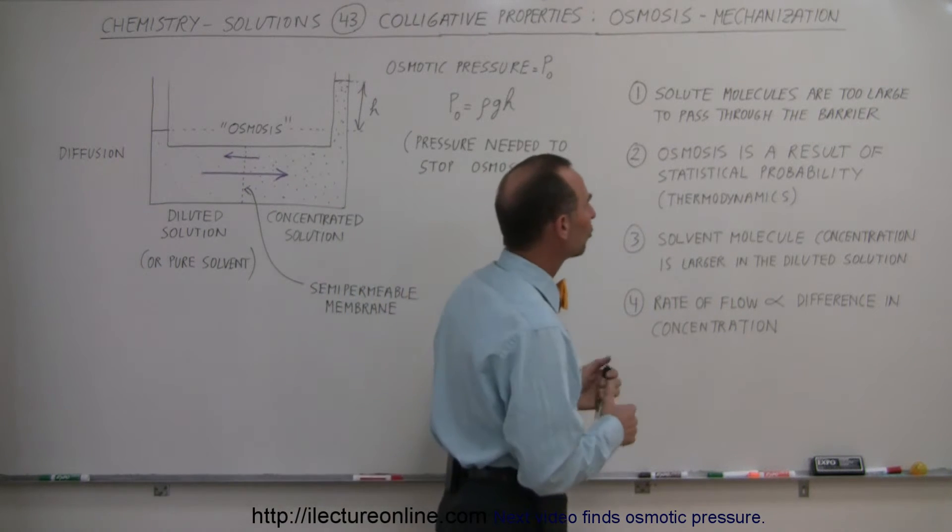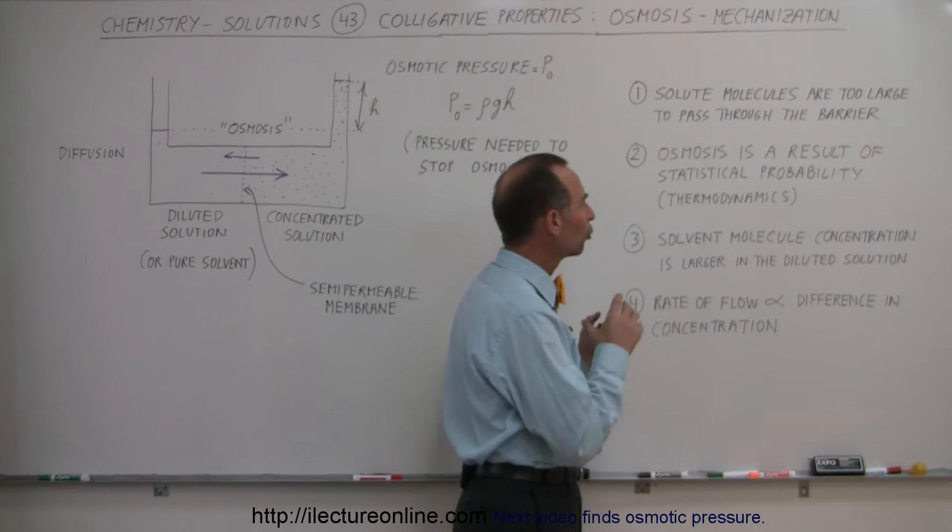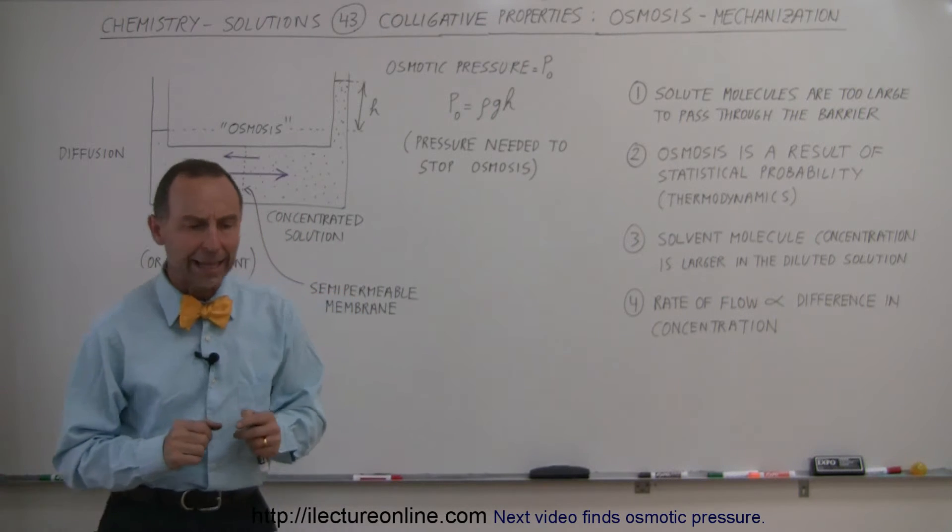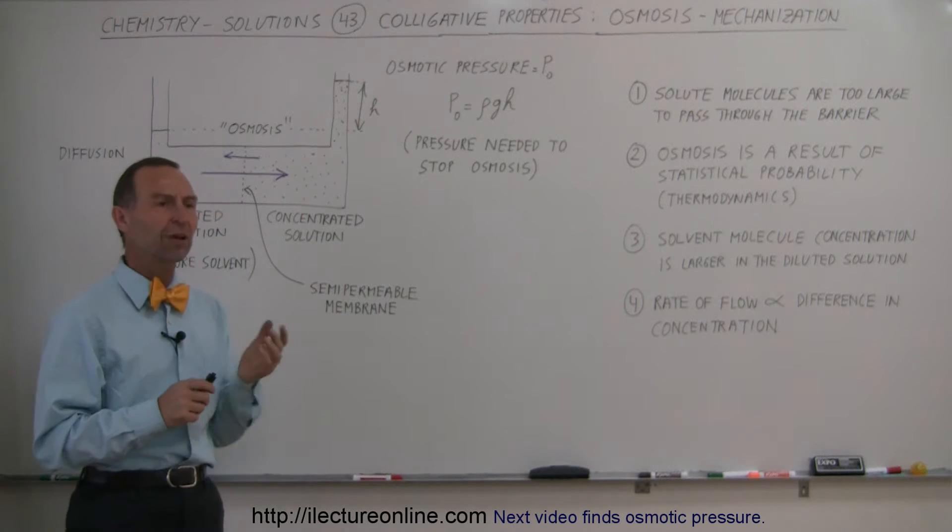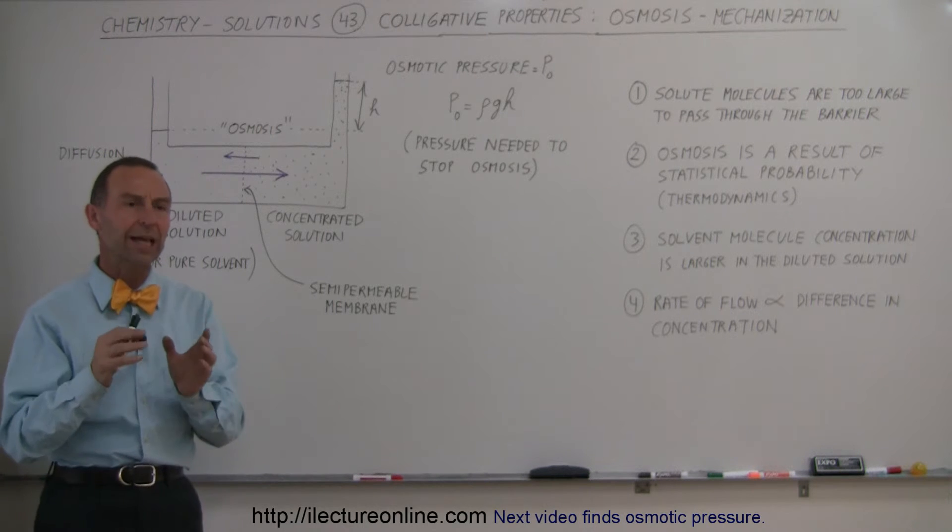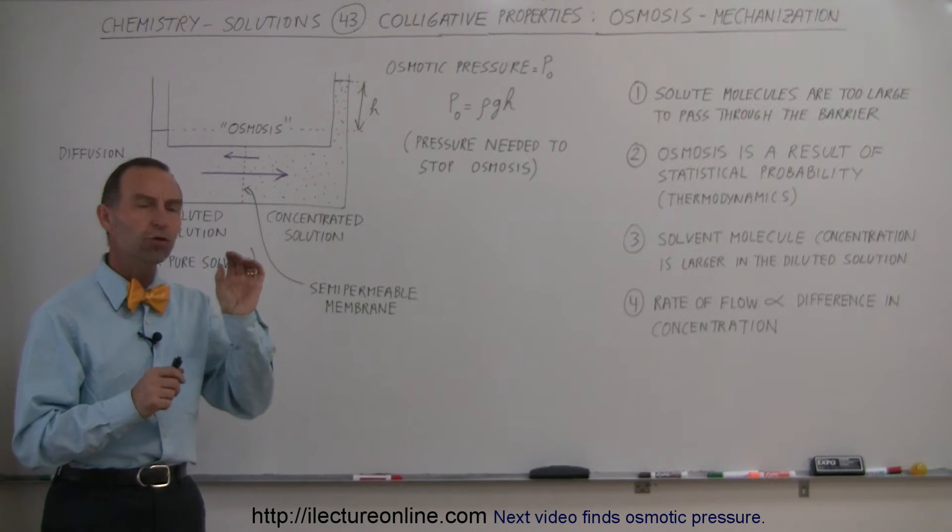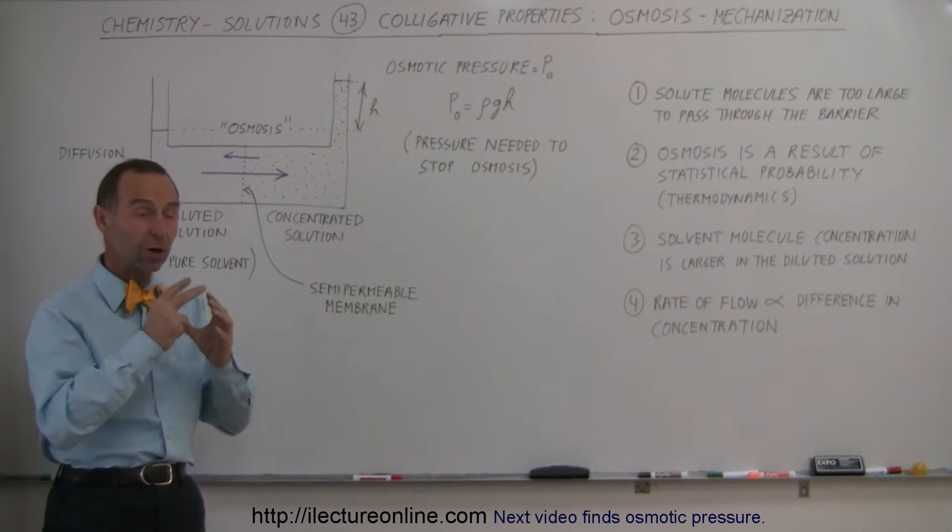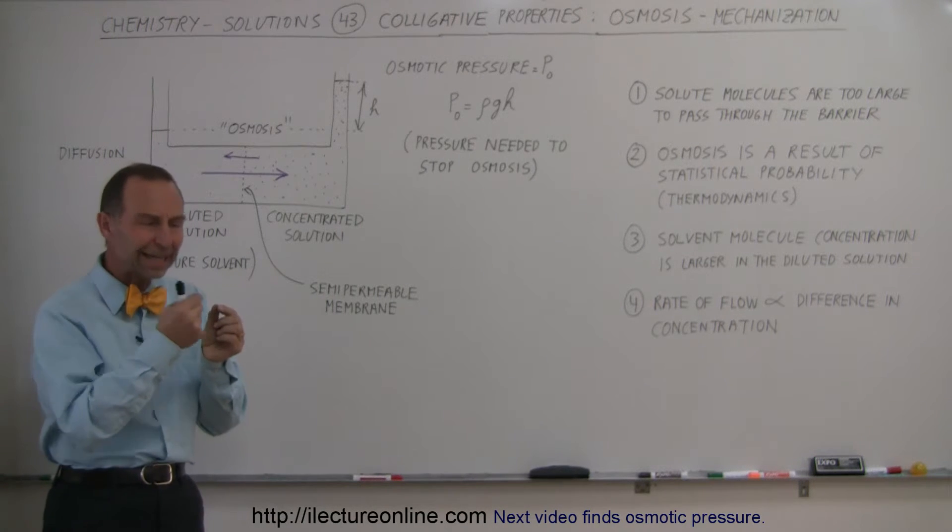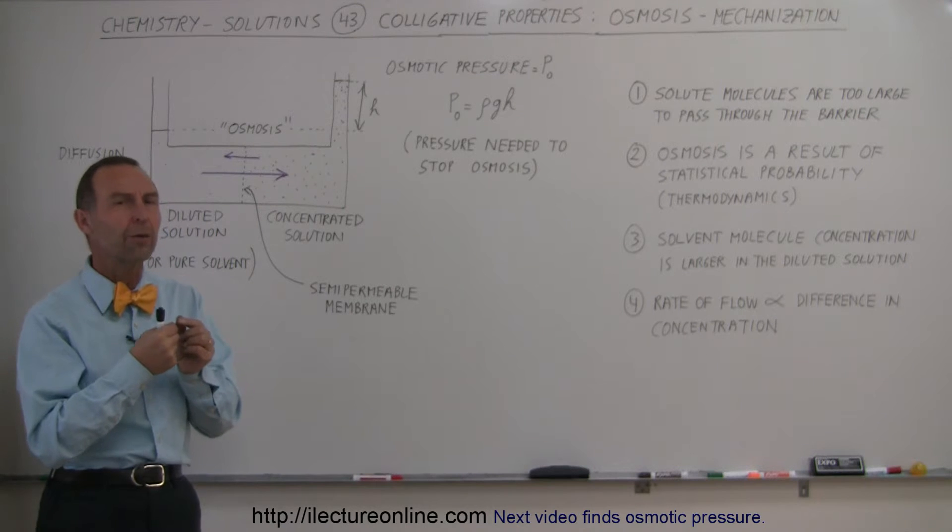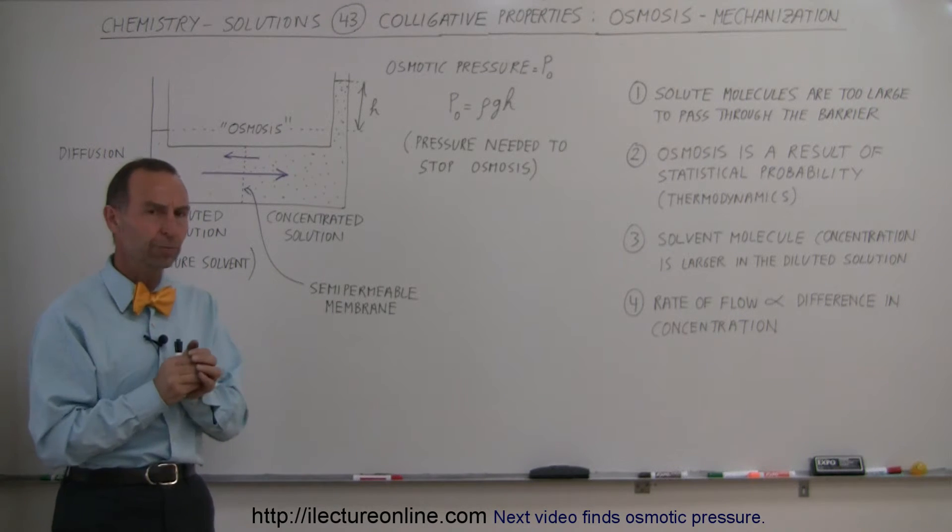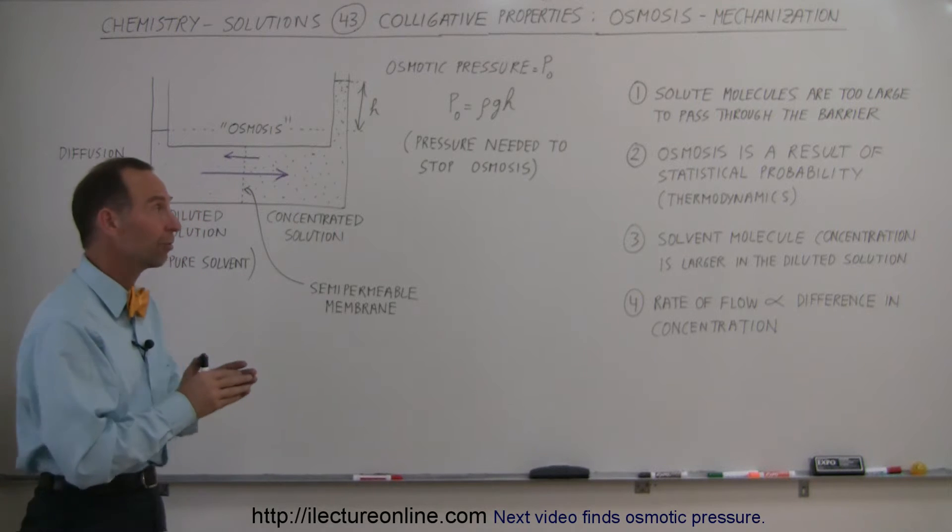First of all, we assume that the solute molecules are too large to pass through the barrier, that semi-permeable membrane, and that is typically the case. There are some exceptions, but in the vast majority of cases, the solute molecules are larger than the water molecules. Most of the time the solvent we're dealing with is water, and so they cannot pass through the barrier however much they try. There's just not enough room for them to pass through, but the water molecules can. That's our first premise.